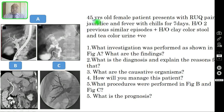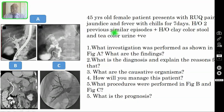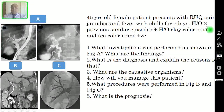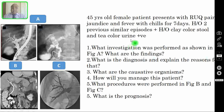This is a 45-year-old female patient presenting with right upper quadrant pain, jaundice, and fever with chills for seven days duration. There was history of two previous similar episodes. History of clay-colored stool and tea-colored urine also present.